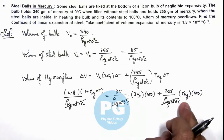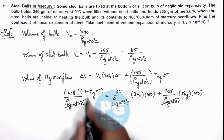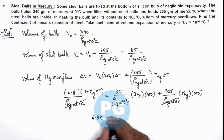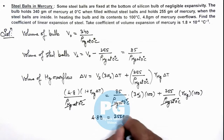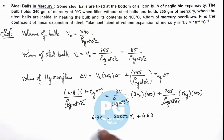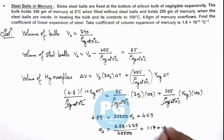Further simplifying by substituting γ(mercury) = 1.8 × 10⁻⁴, after simplification this gives us: 4.89 = 25500 × α(steel) + 4.59. Solving for the coefficient of linear expansion of steel: α(steel) = (4.89 − 4.59) / 25500 = 1.17 × 10⁻⁵ per degree centigrade. That is the result of this problem.